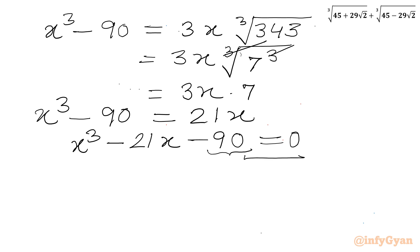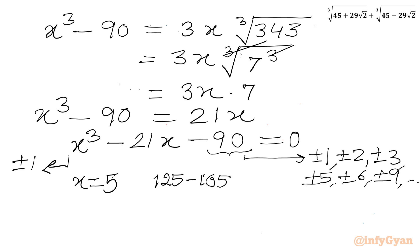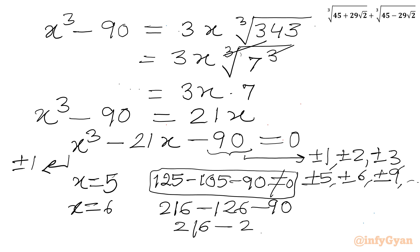Now I will use the rational root theorem. The eligible factors of 90 are plus or minus 1, 2, 3, 5, 6, 9, 10, and so on. The leading coefficient is 1, so plus or minus 1 only. Let me consider x equal to 5: that gives 125 minus 105 minus 90, which does not satisfy the equation. Let us consider x equal to 6: that gives 216 minus 126 minus 90, which equals 216 minus 216, giving 0. So x equals 6 is our base solution.